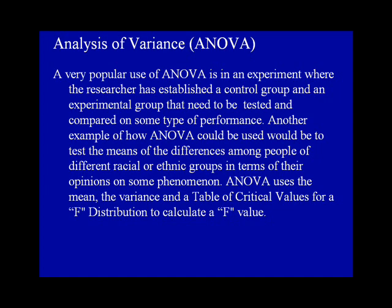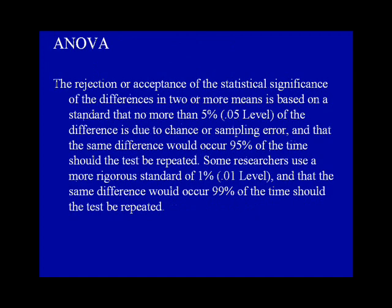ANOVA uses the mean, the variance, and a table of critical values for an F distribution to calculate an F value. The rejection or acceptance of the statistical significance of the differences in two or more means is based on a standard that no more than 5% of the difference is due to chance or sampling error, and that the same difference would occur 95% of the time should the test be repeated. Some researchers use a more rigorous standard of 1%, where the same difference would occur 99% of the time should the test be repeated.